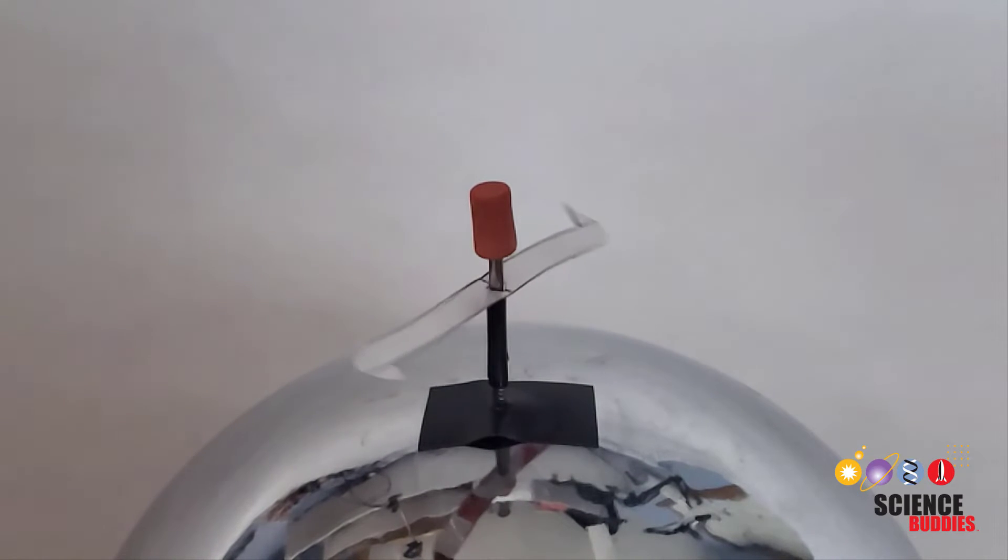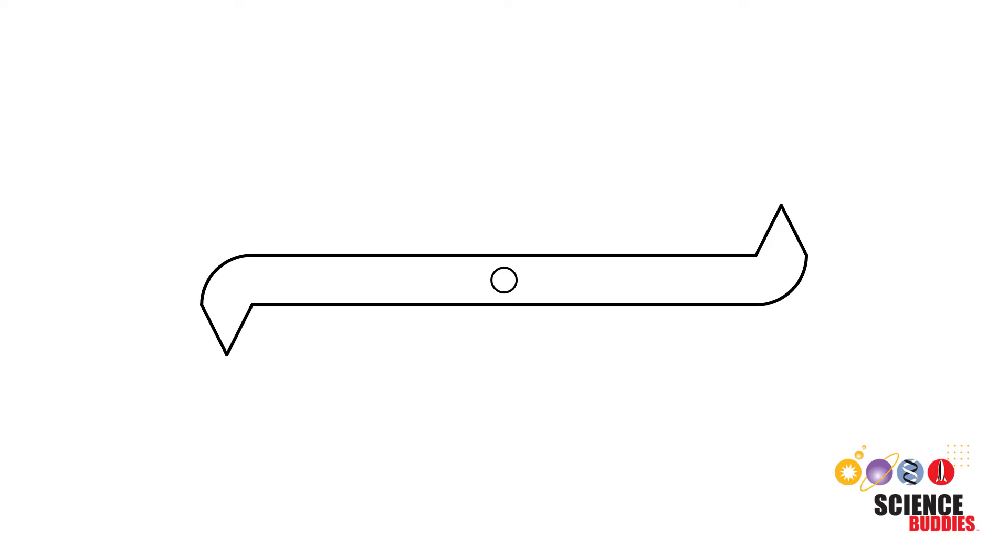Now, switch your Van de Graaff generator on and as you can see here in slow motion, your rotor should spin. But how does it work? Your Van de Graaff generator generates electrostatic charge. This causes positive charges to accumulate on your rotor since it's in electrical contact with the dome of the generator. However, those charges aren't evenly distributed. They tend to cluster near sharp corners like the tips of your rotor blades.